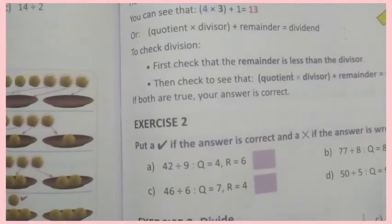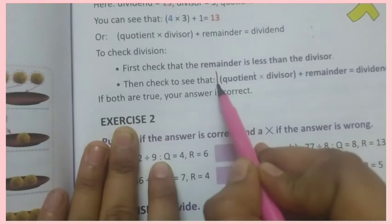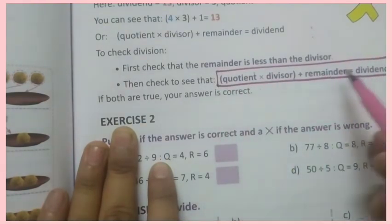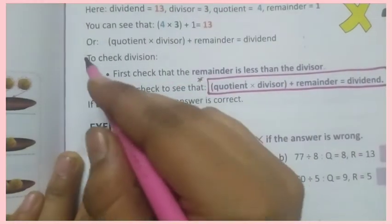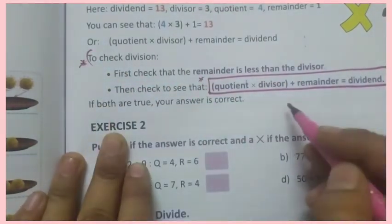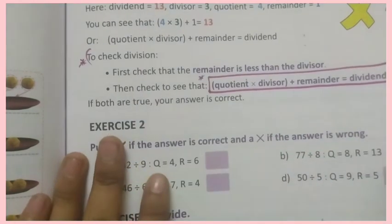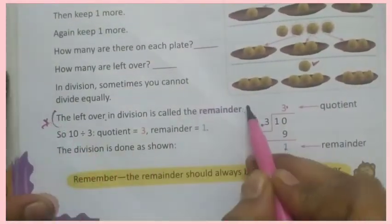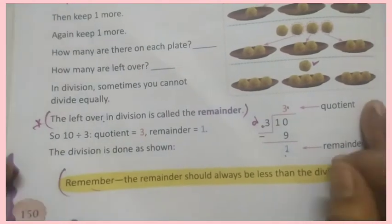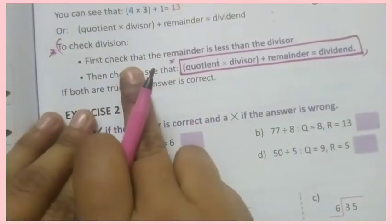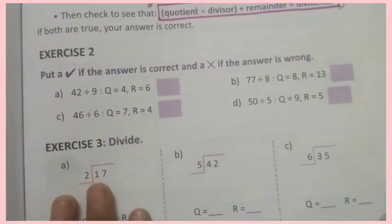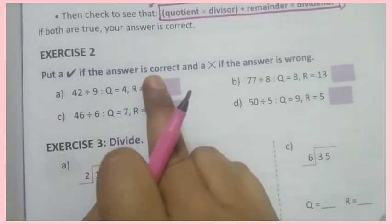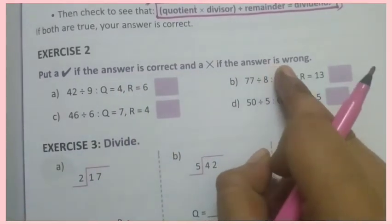Now, look here children — checking division. There is a formula for checking division: quotient into divisor plus remainder equals dividend. Write this in your fair notes. Write exercise 2: put a right tick if the answer is correct, a wrong tick if the answer is wrong.